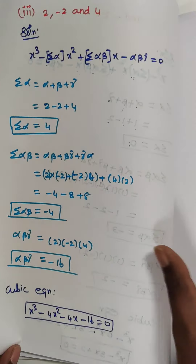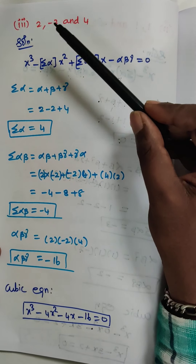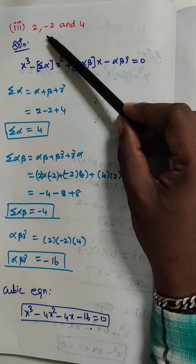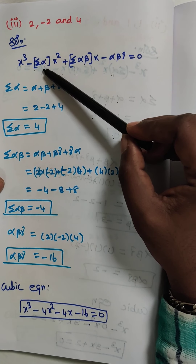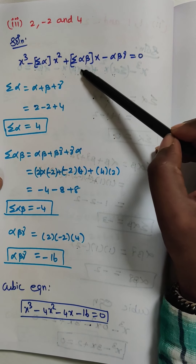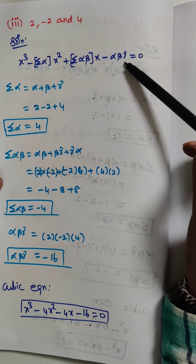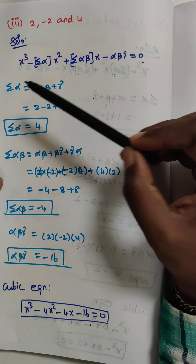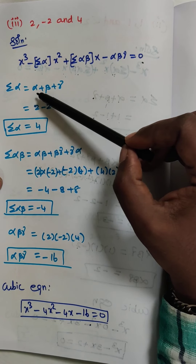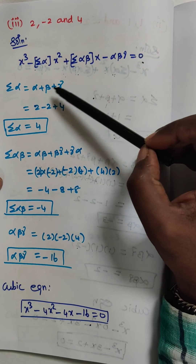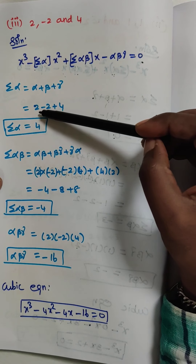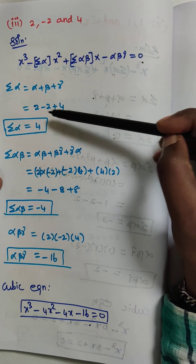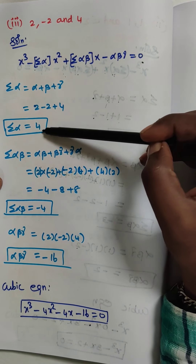Next we have the third subdivision. The roots are 2, −2 and 4. Using the formula, Σα = α + β + γ = 2 + (−2) + 4. Since 2 and −2 cancel, the answer is 4. So Σα = 4.